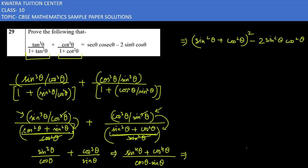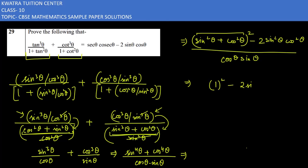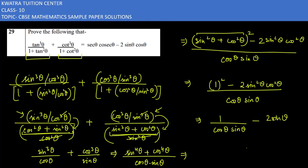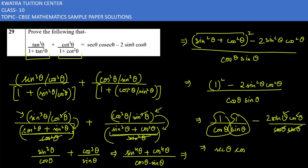Now, sin²θ + cos²θ = 1, so the bracket becomes 1² - 2sin²θcos²θ, divided by cosθ·sinθ. This gives us 1/(cosθ·sinθ) - 2sinθcosθ. Cancelling cosθ with cosθ and sinθ with sinθ, we get secθ and cosecθ for the first term.